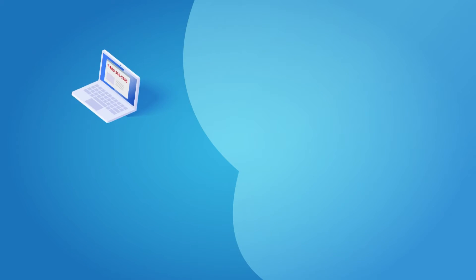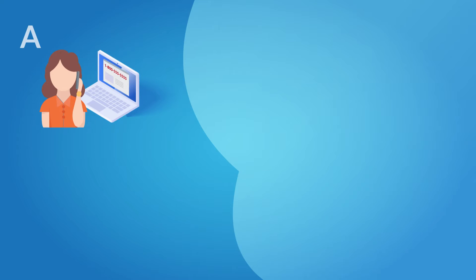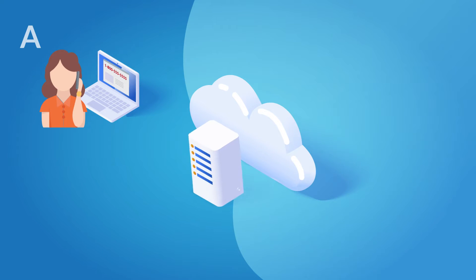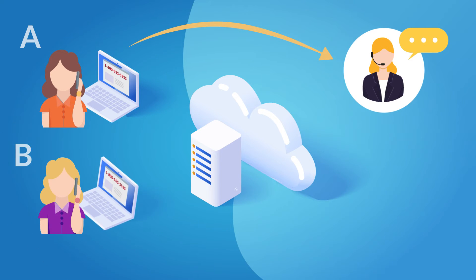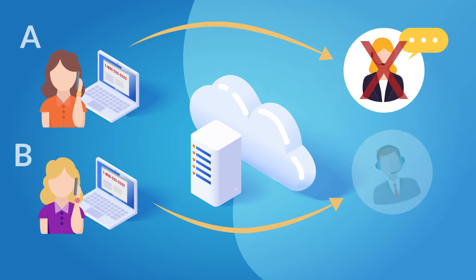Here's one example. Let's say you advertise your business phone number on your website, and customer A decides to call this number. As a cloud telephony provider, our system receives the call and routes it to your agent's desk phone. The agent then answers the call. Now, at the same time, customer B calls you as well. Our network knows that the first sales agent is busy, so the call will automatically forward to the second agent in your sequence.